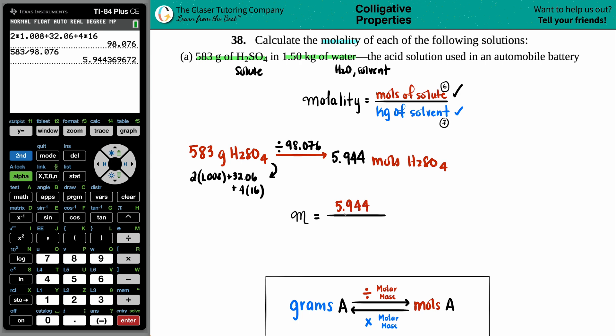So we got 5.944. They already gave me the kilograms. Thank you very much. So I'm just going to take my number up here, divide it by 1.50. And that is the molality. So technically, three sig figs. So 3.96.